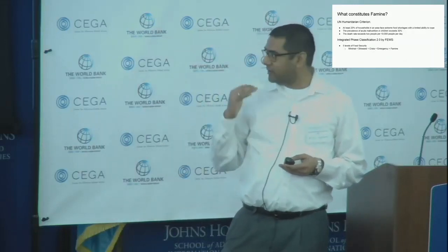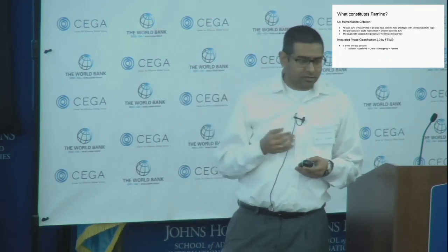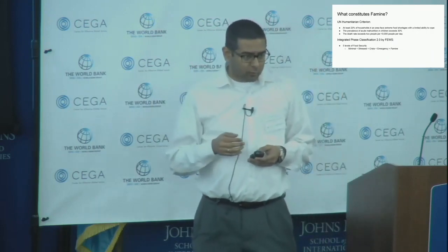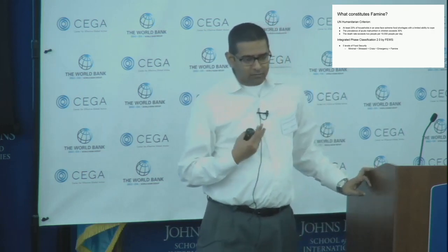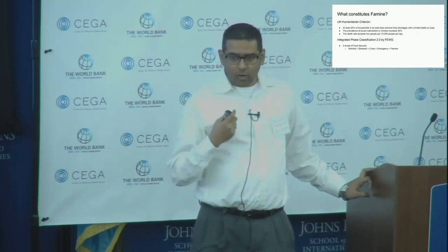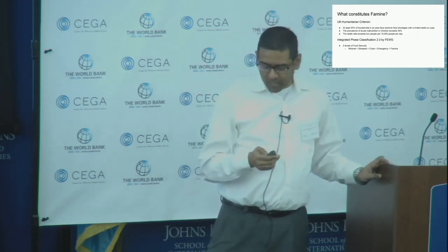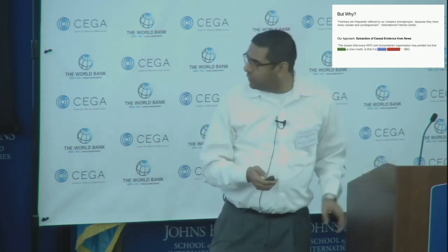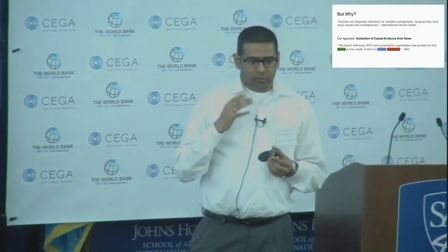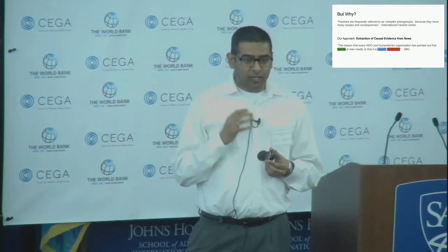There is a five-level classification of famine, starting from minimal stress, crisis, emergency, going all the way to full-blown famine. The question here is: can we use natural language processing and machine learning to characterize or predict this level using news data? The reason I want to use the word causal evidence is rather than throwing statistics at the problem, I'm actually going to throw English at the problem.